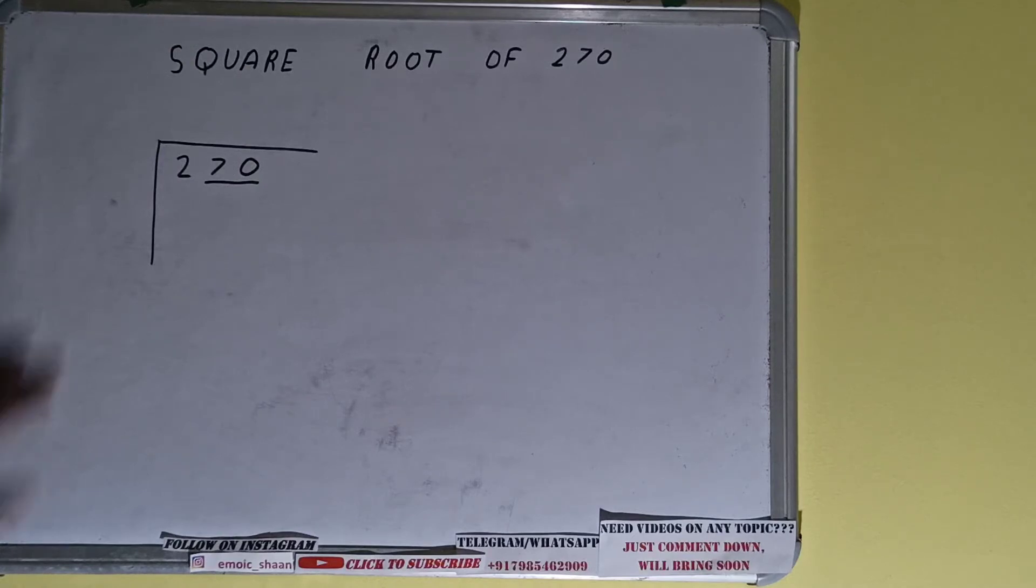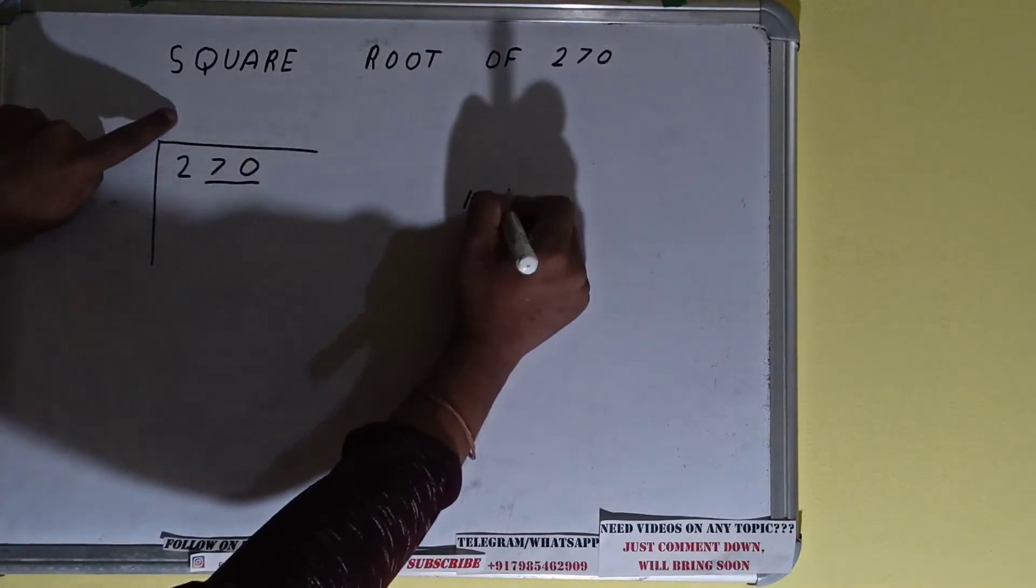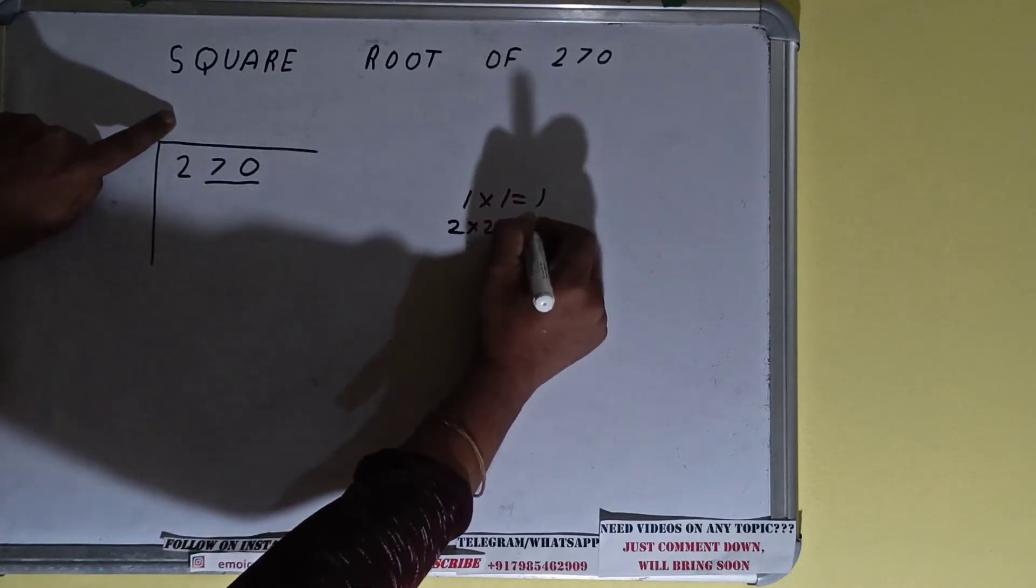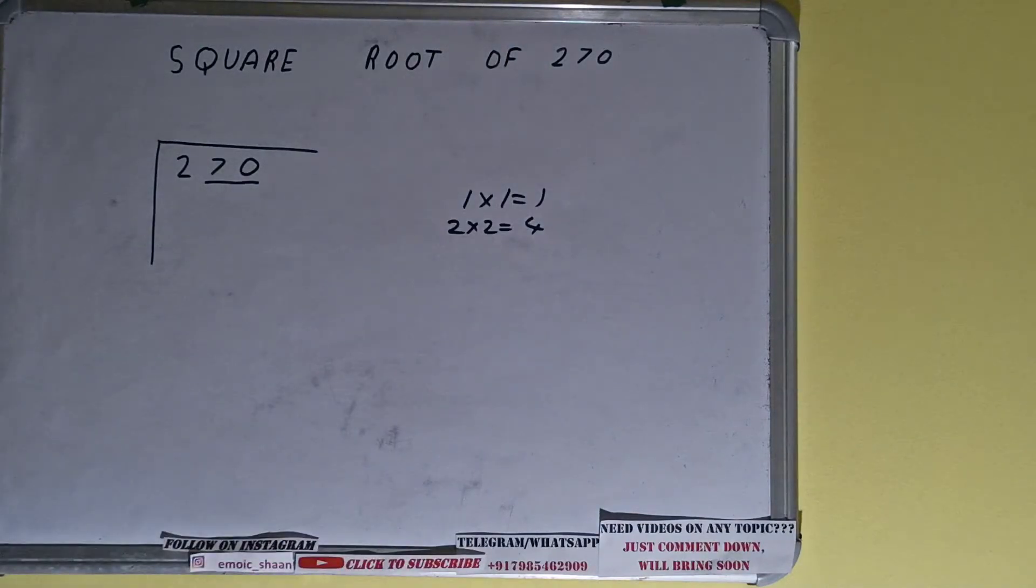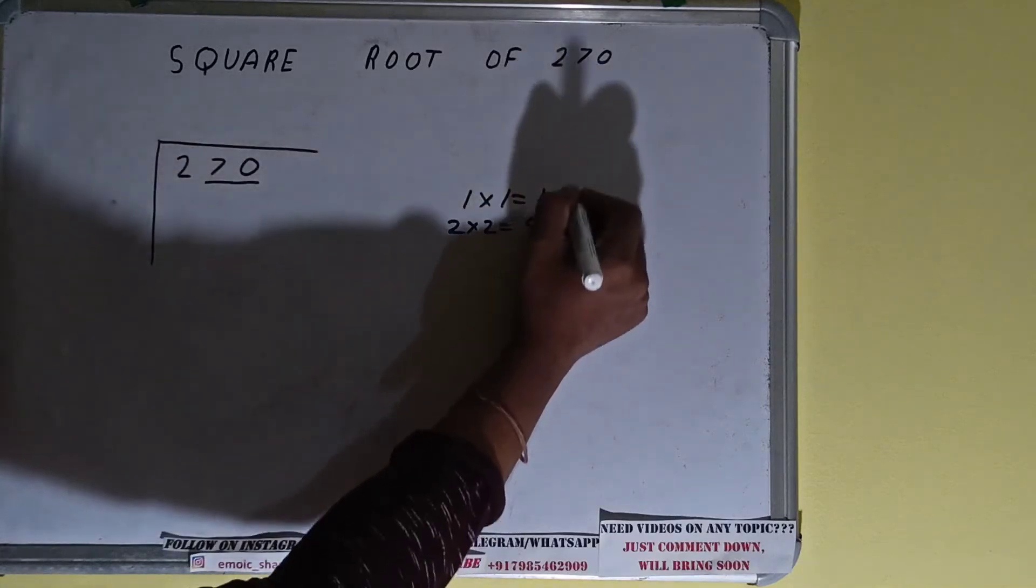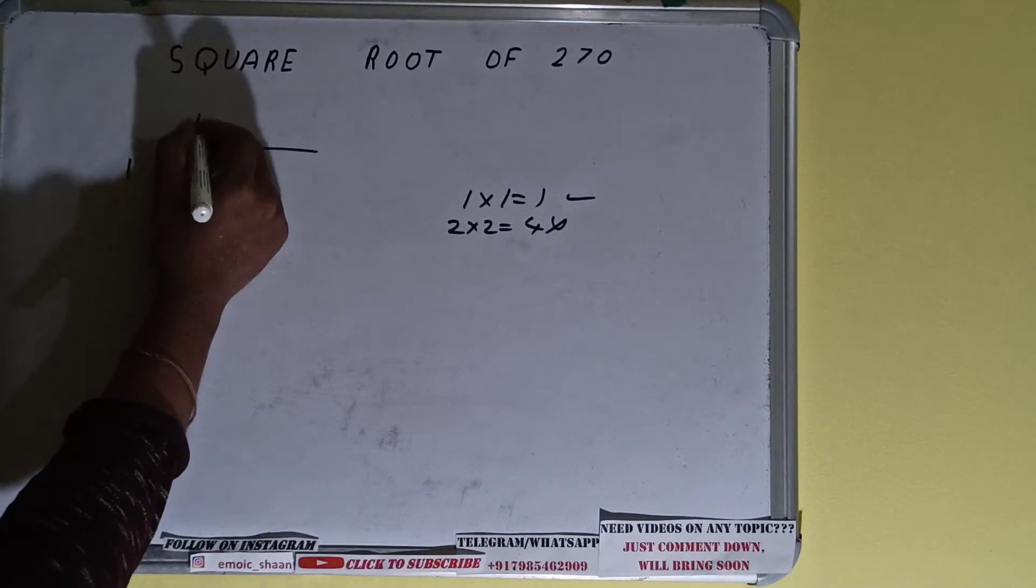First we'll divide these two and then we'll bring down the pair. The rule is whatever number we write here we have to write here as well. So if we write one here and one here it will give one. If we write two here and two here it will give four. Now we cannot use four because four is greater than two, so we have to go with this one. So one here and one here will give one.